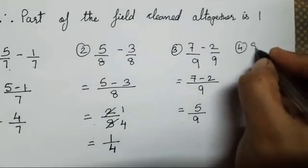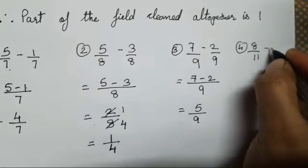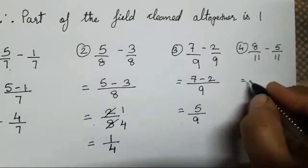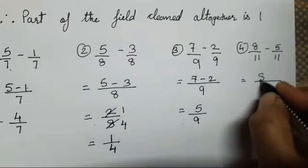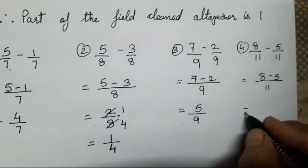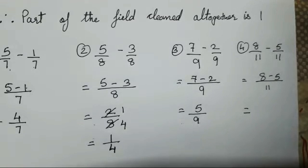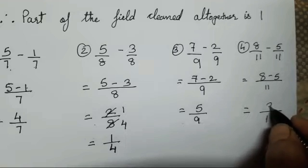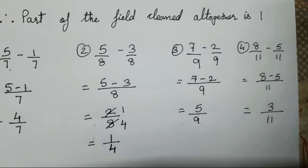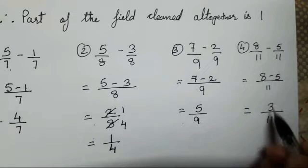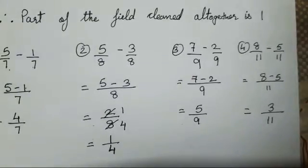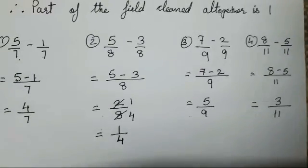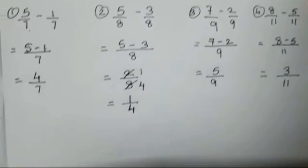The fourth sum is 8 upon 11 minus 5 upon 11. 8 minus 5 is supposed to be 3 upon 11. 3 cannot be divided with both the numbers in a single table — it cannot be reduced. So we have to keep it as it is, and this is your answer for your fourth fraction.